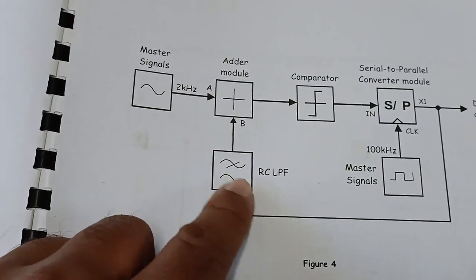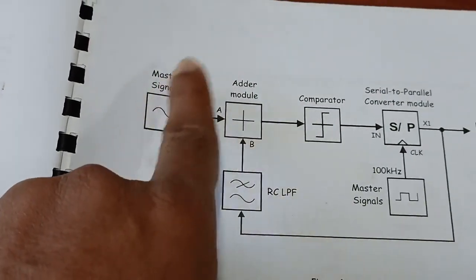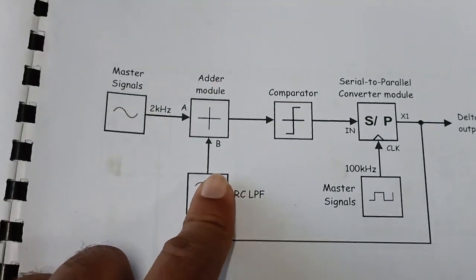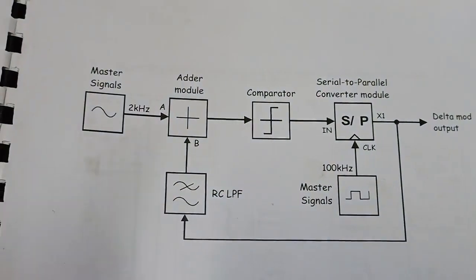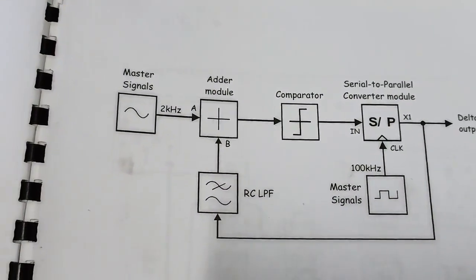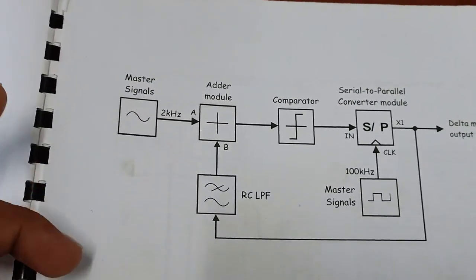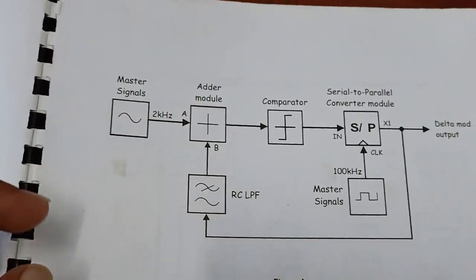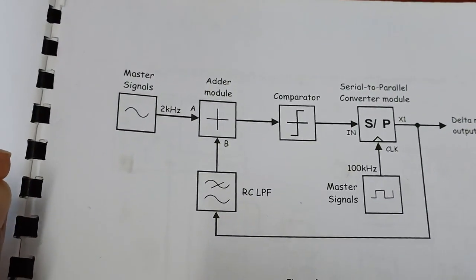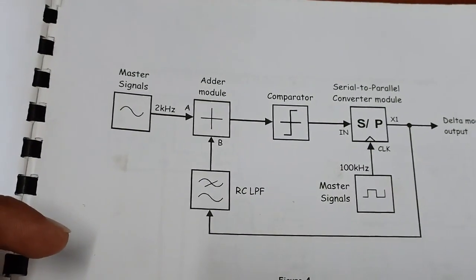The RC low pass filter converts the digital signal to analog, and then this analog signal is subtracted from the original one. There is a difference between the current sample and the previous sample. If that difference is positive, delta is plus 1, that is 1, and if the difference is negative it means the signal is decreasing and outputs 0.